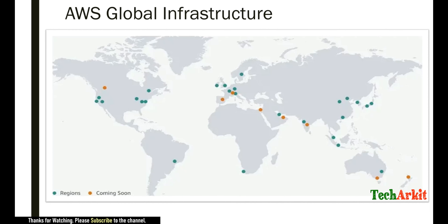If you see the AWS global infrastructure, they have presence in various countries and various regions. You can see the green regions which are already live and up and running, and there are some regions coming soon. They have the Asia Pacific region, US region, Europe region, and others.